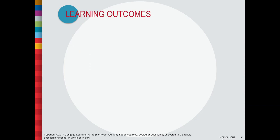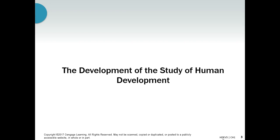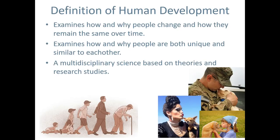First of all, developmental psychology is the study of human development. That actually means a lot of things. Humans develop in a lot of different ways — biologically, psychologically, socioculturally. There's just a lot of different ways that we grow and change. Therefore, developmental psychology takes information and theories from a lot of different fields of science, including biology, psychology, and other social sciences.